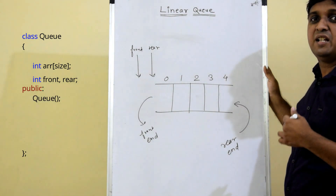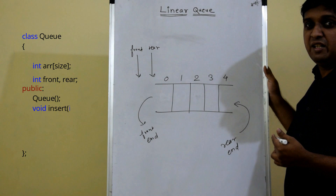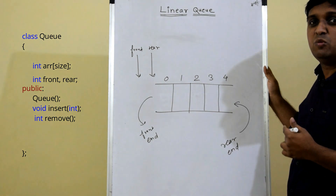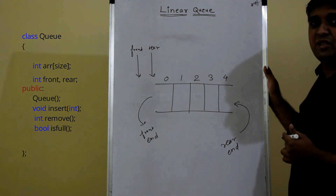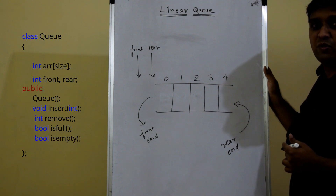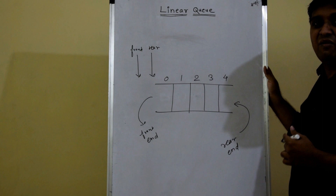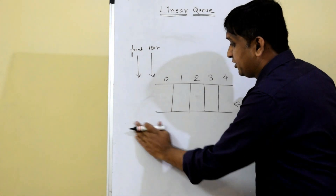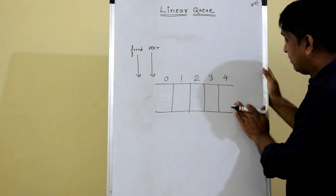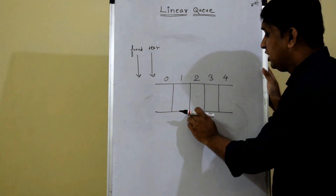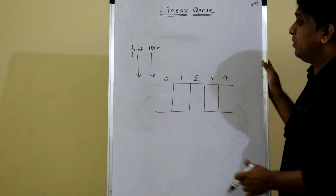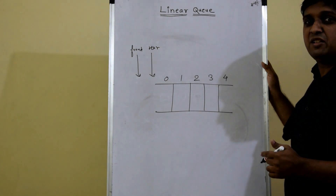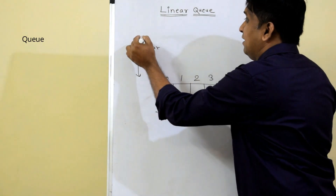Operations on queue will become member functions of the class: a constructor, an insert function for the insert operation, a remove function for the remove operation, an isFull function, and an isEmpty function to handle overflow and underflow exceptions. In the constructor, we initialize front and rear — just as we initialized top to minus one in stack, here also we initialize front and rear to minus one.